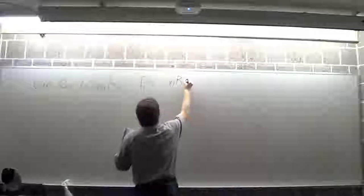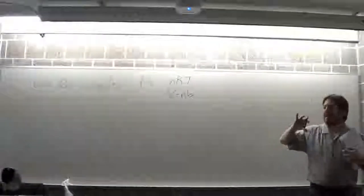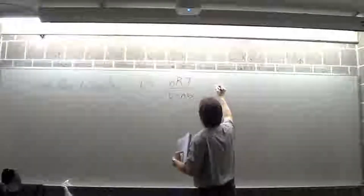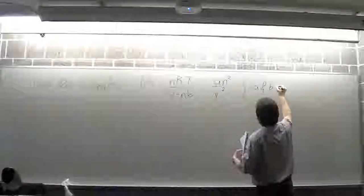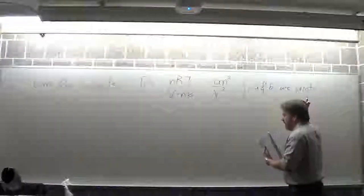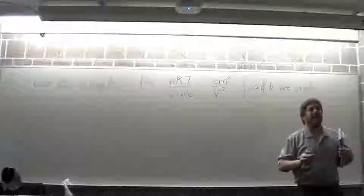The van der Waals equation gives us those wiggles in the P versus V isotherms. It's a real gas equation, but it has a lot more immediate physical meaning, so I like it better and design most questions around it. The equation is P = nRT/(V - nb) - an²/V².